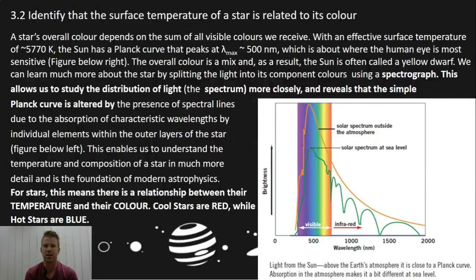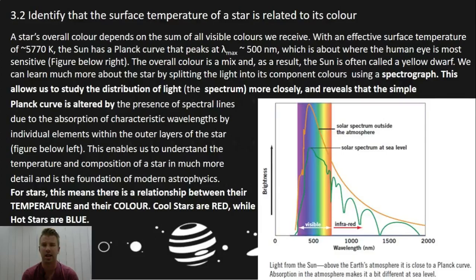Section 3.2 identifies that the surface temperature of a star is related to its color. In 3.1 we looked at different peaks of wavelength dependent on the radiation of energy, or radiant energy. Here we are looking at something very similar: different wavelengths of energy, examining whether the surface temperature of a star is related to its color.